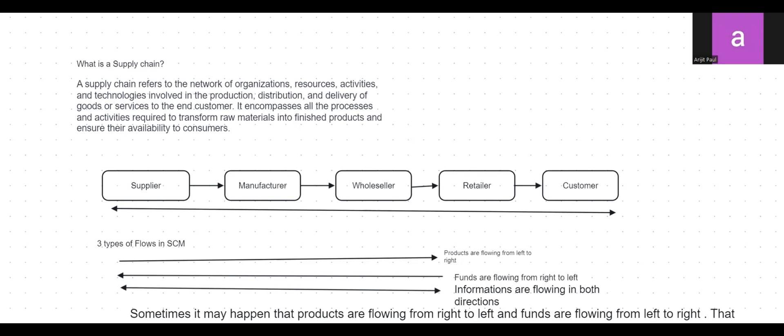The first statement mentions a network of organizations and resources involved in the production, distribution, and delivery of goods or services to end customers. In this diagram, I have plotted a network: supplier, manufacturer, wholesaler, retailer, and end customer. The entire chain is a part of the supply chain.